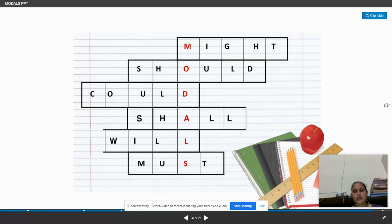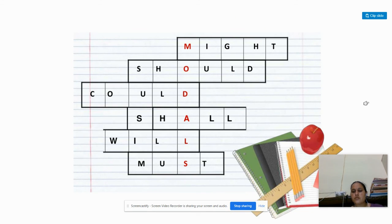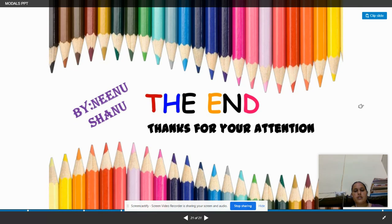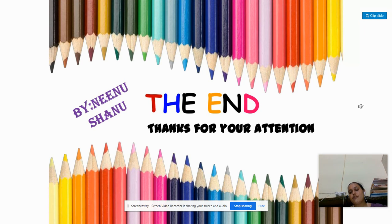Next we have a puzzle showing the modal verbs: might, should, could, shall, will, must. In this form we can make these modals. So this is all about the modals. If you have any doubt then you can ask me in the comments. Thank you.